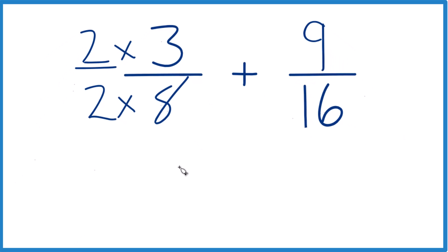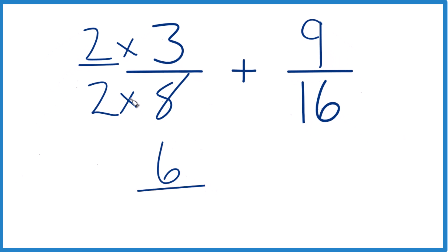So now we have 2 times 3 is 6, 2 times 8 is 16, and 6 sixteenths is the equivalent fraction to 3 eighths. They have the same value.